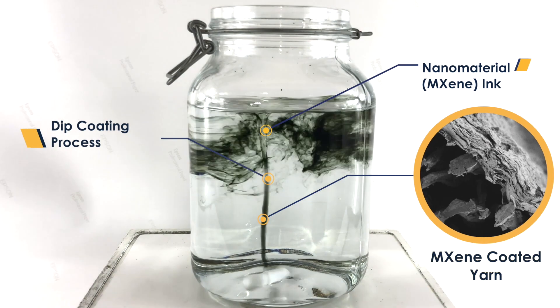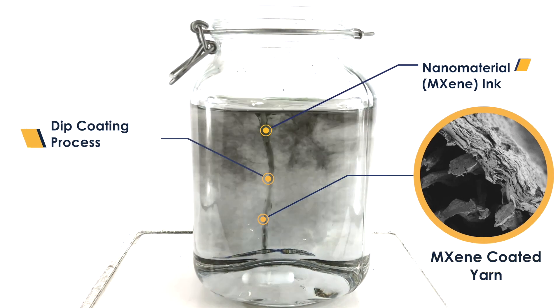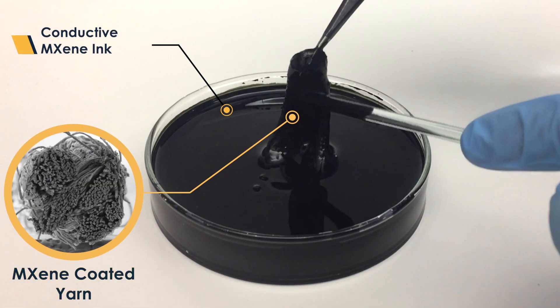MXene 2D nanoparticles are like sheets of paper but much thinner. They are electrically conductive and bond to many different surfaces.